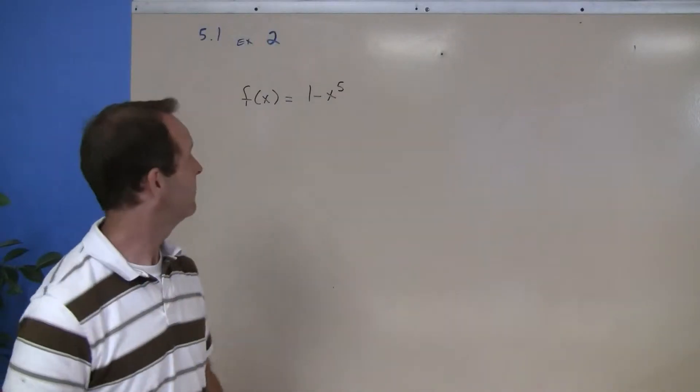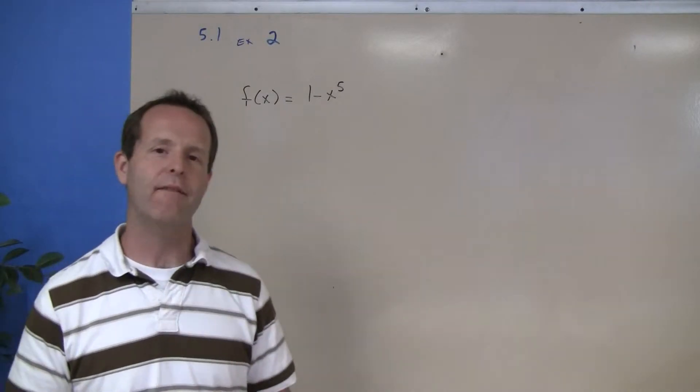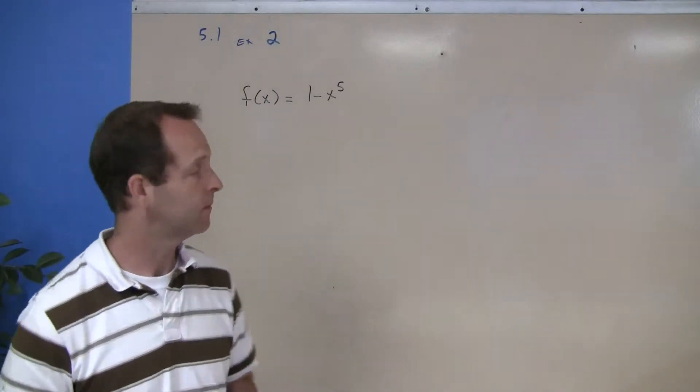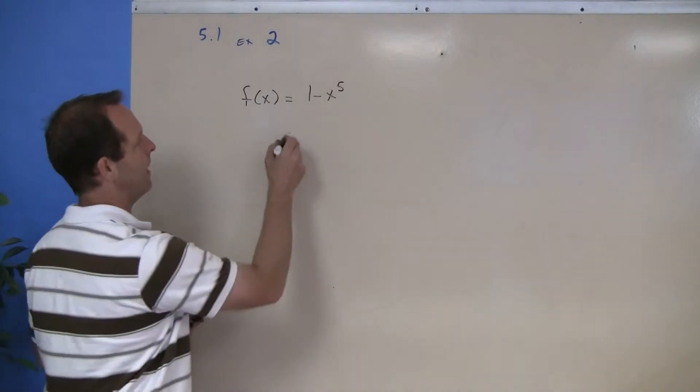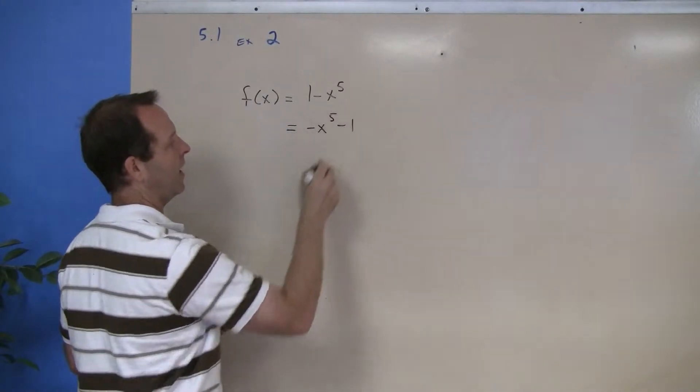Here I have a polynomial function f of x equals 1 minus x to the fifth, and I want to graph this through some transformations. In order to do this, it may be helpful to rewrite it as negative x to the fifth plus 1.